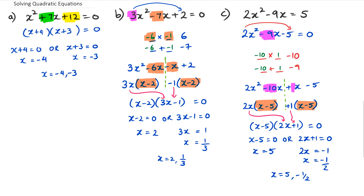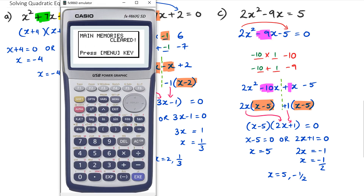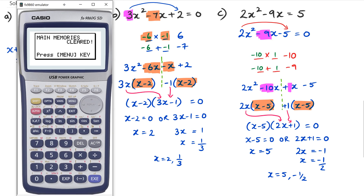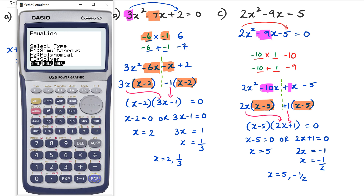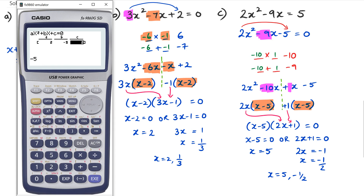Let me do a quick check using the graphics calculator. If you have one, you can use it to verify your answers — I've set up videos for that in the graphics calculator tip section, so check that playlist. Going into polynomial degree two for question B: I enter 3, −7, and +2. My first answer is 2 and second is 1/3 — you can see 0.33 on screen, and bottom right shows it as a fraction. For question C, entering 2, −9, and −5 gives positive 5 and negative one over two.